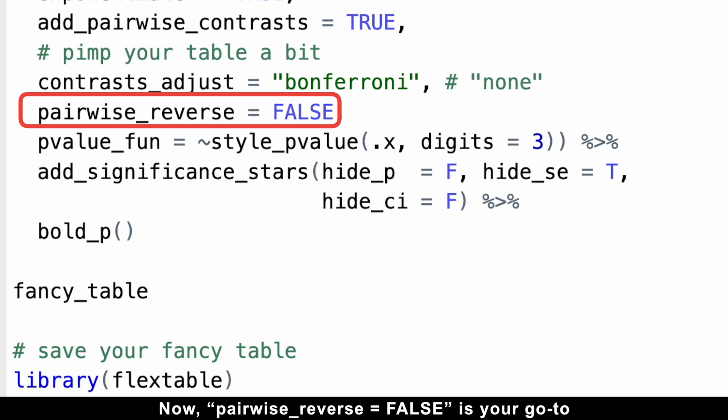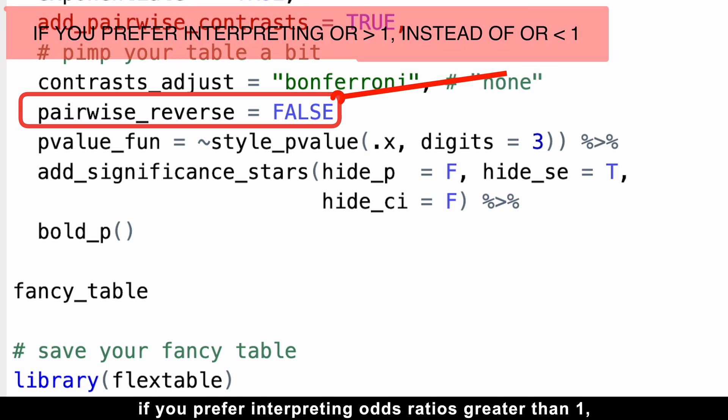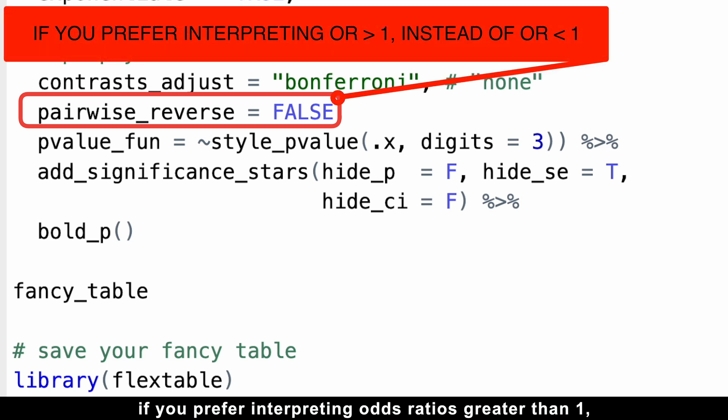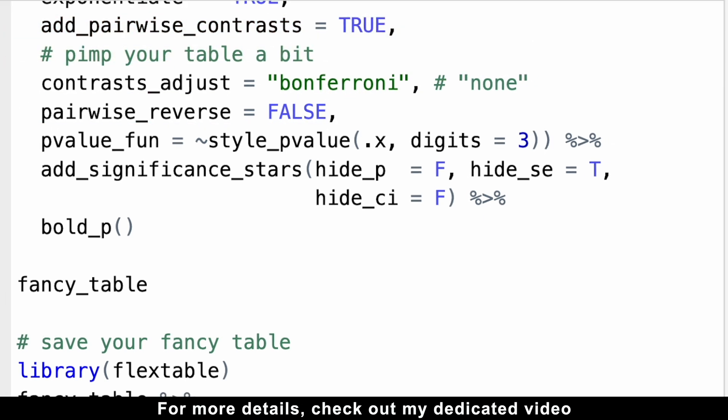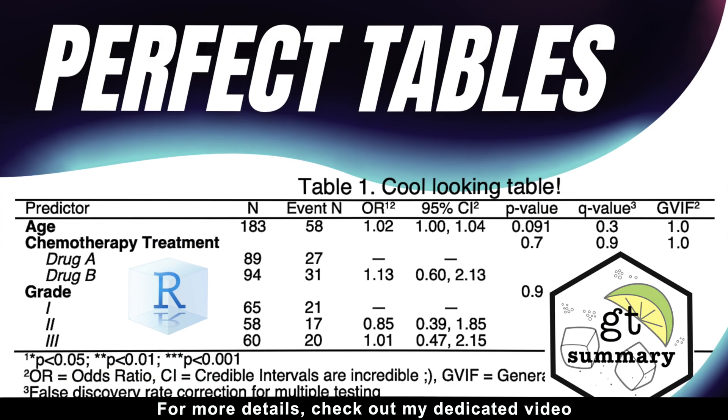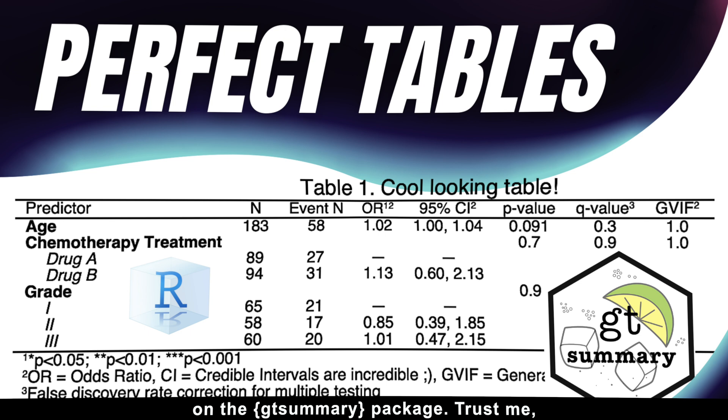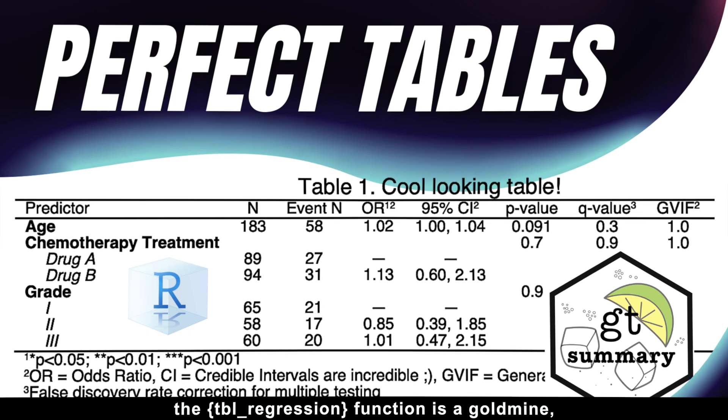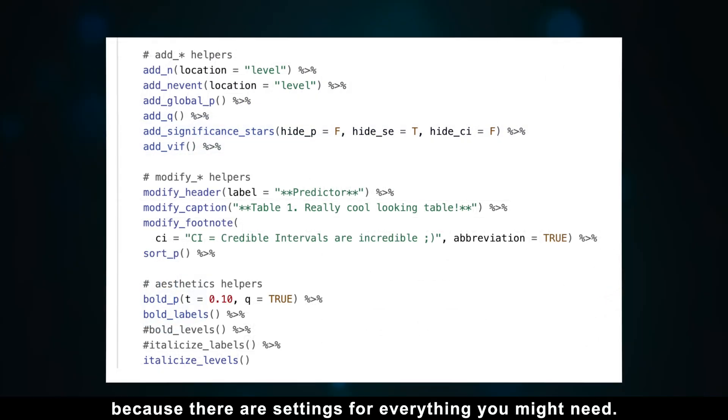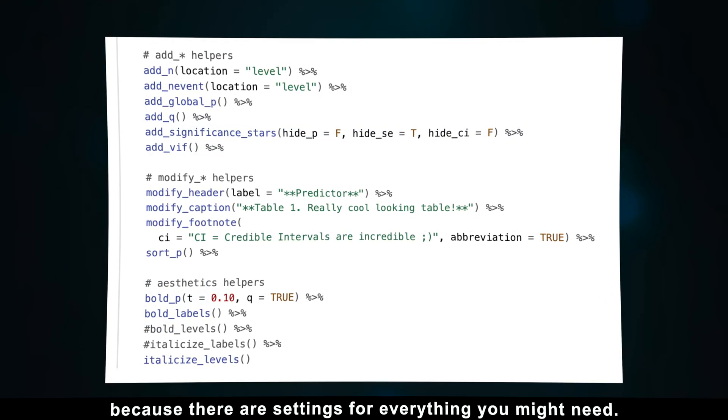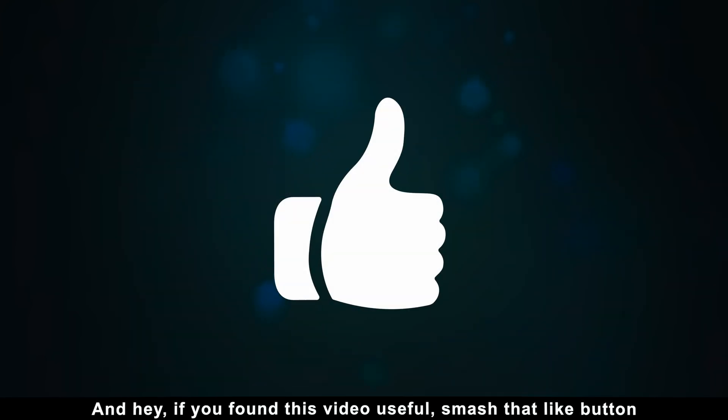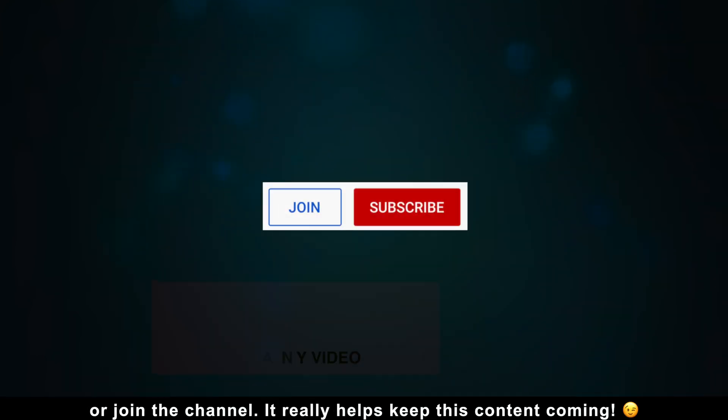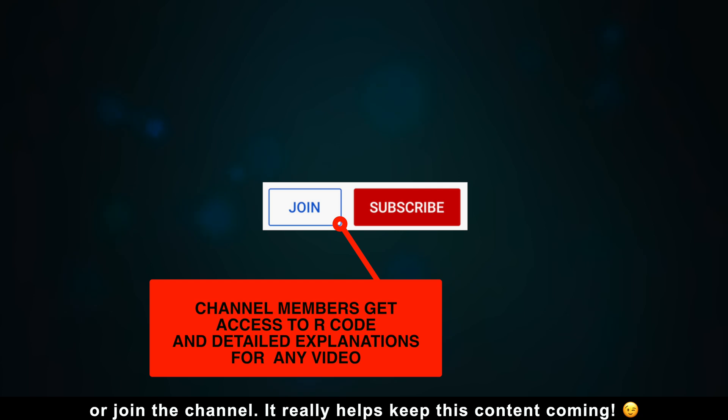Now, pairwise_reverse equals false is your go-to if you prefer interpreting odds ratios greater than 1 instead of less than 1. For more details, check out my dedicated video on the gtsummary package. Trust me, the tbl_regression function is a goldmine because there are settings for everything you might need. And hey, if you found this video useful, smash that like button or join the channel. It really helps keep this content coming.